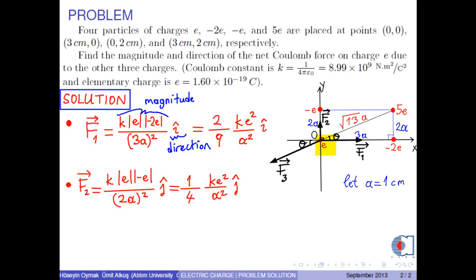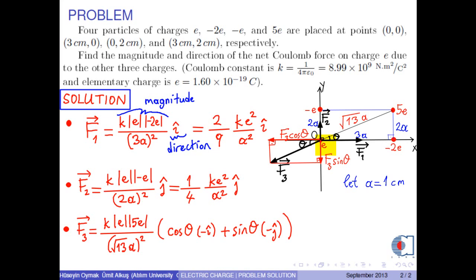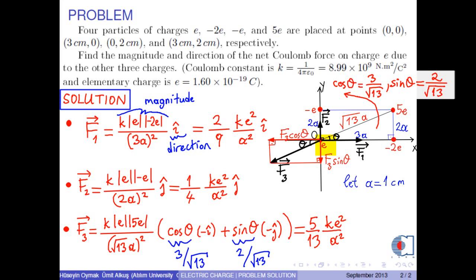Therefore, the magnitude of force F3 is K times absolute value of E times absolute value of 5E over square root of 13A squared. And the direction is cosine theta negative I hat plus sine theta negative J hat. From the right triangle, cosine theta is 3 over square root of 13 and sine theta is 2 over square root of 13. So, the result is 5 over 13 times KE squared over A squared times negative 3 over square root of 13 I hat minus 2 over square root of 13 J hat.